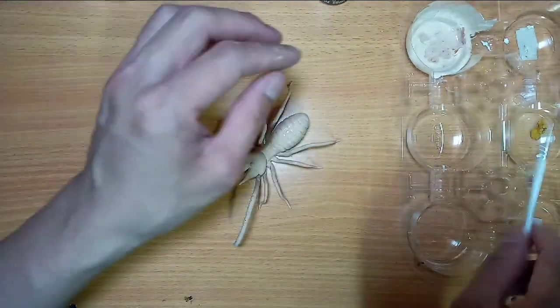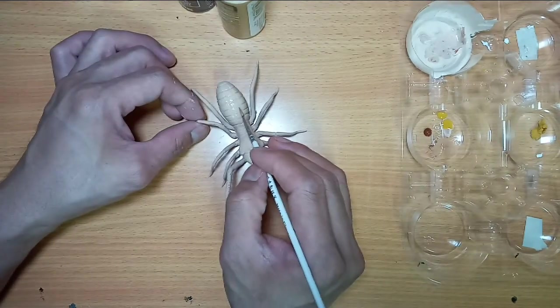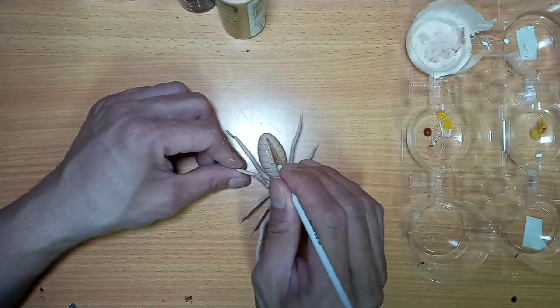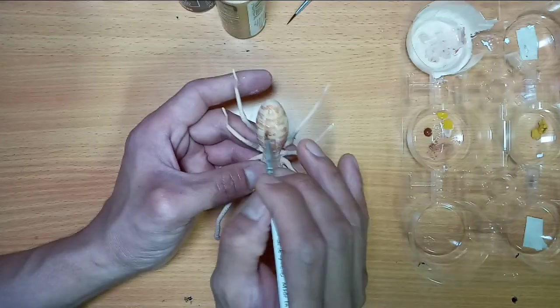Then I brush a retarding medium on its abdomen to prolong my working time while adding these markings on its abdomen called tergites, or the hard plates on the top of its body, using burnt sienna and yellow ochre mix.